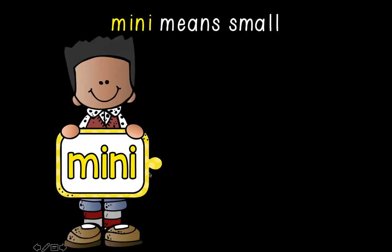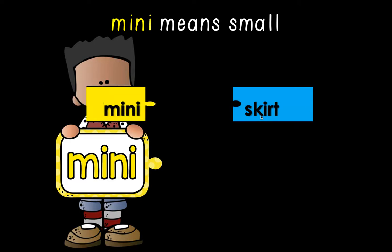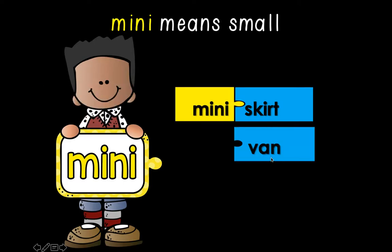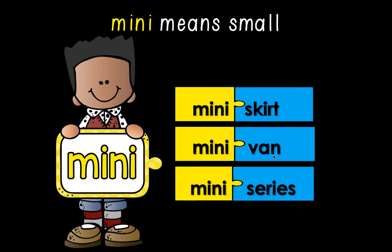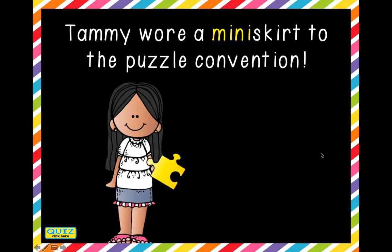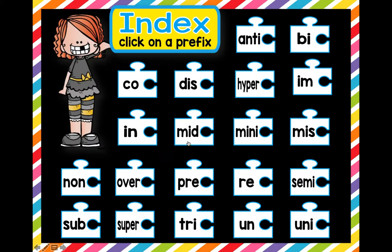Our next prefix is mini — that one's super easy to remember. Mini is a prefix that means small. When you add mini to a root word, it changes it to a smaller meaning. Skirt — if you put mini on there, it means it's a short skirt. Van becomes minivan, a small van. Series becomes miniseries, a short series — probably about three episodes. Mini means small or short.